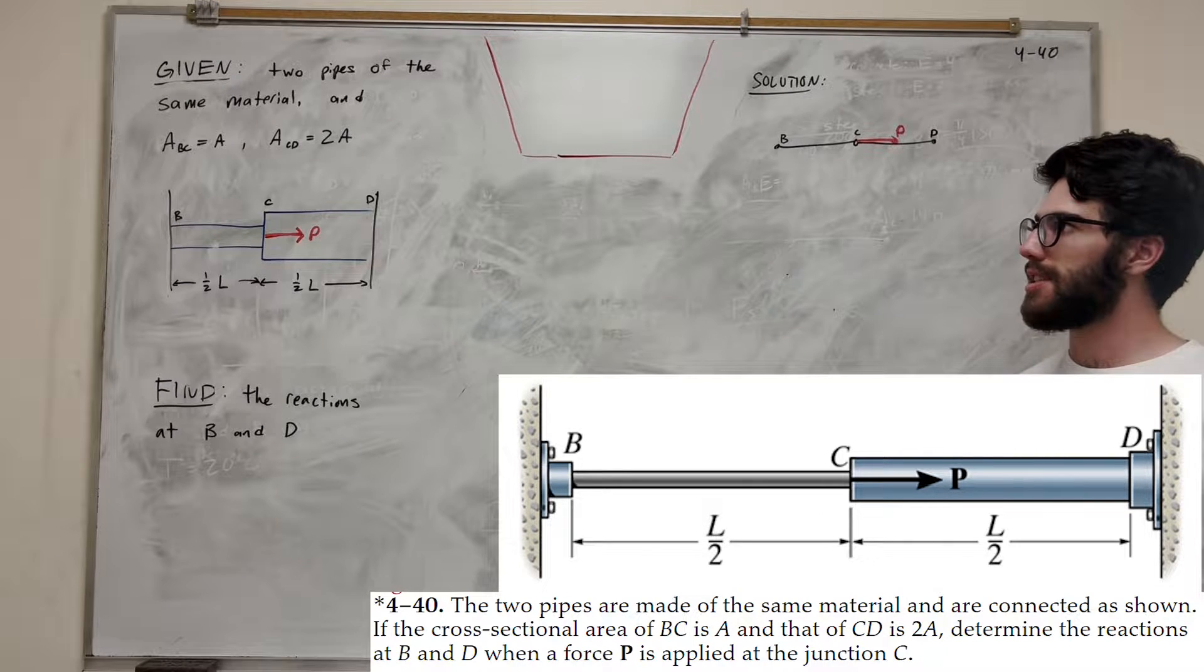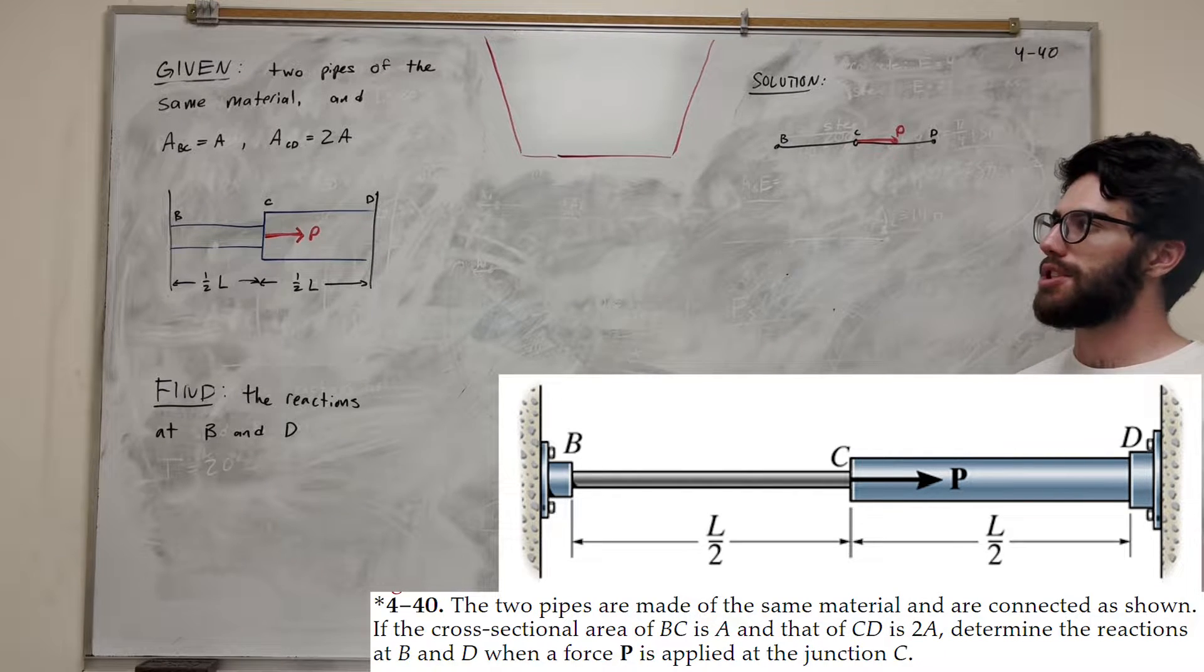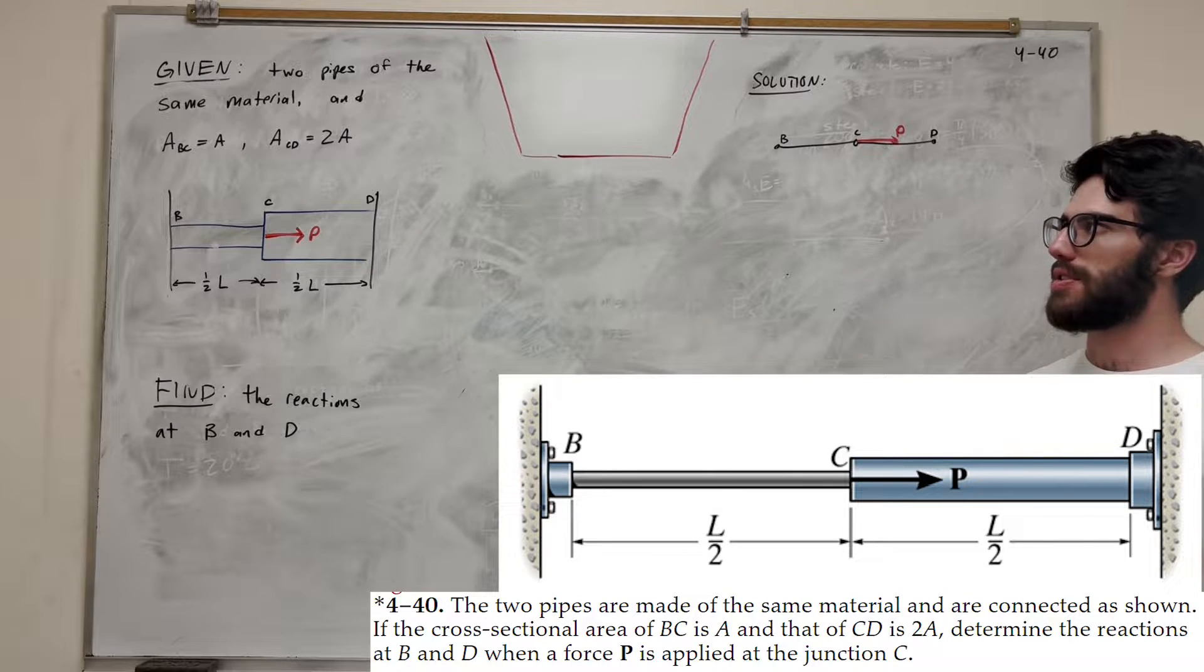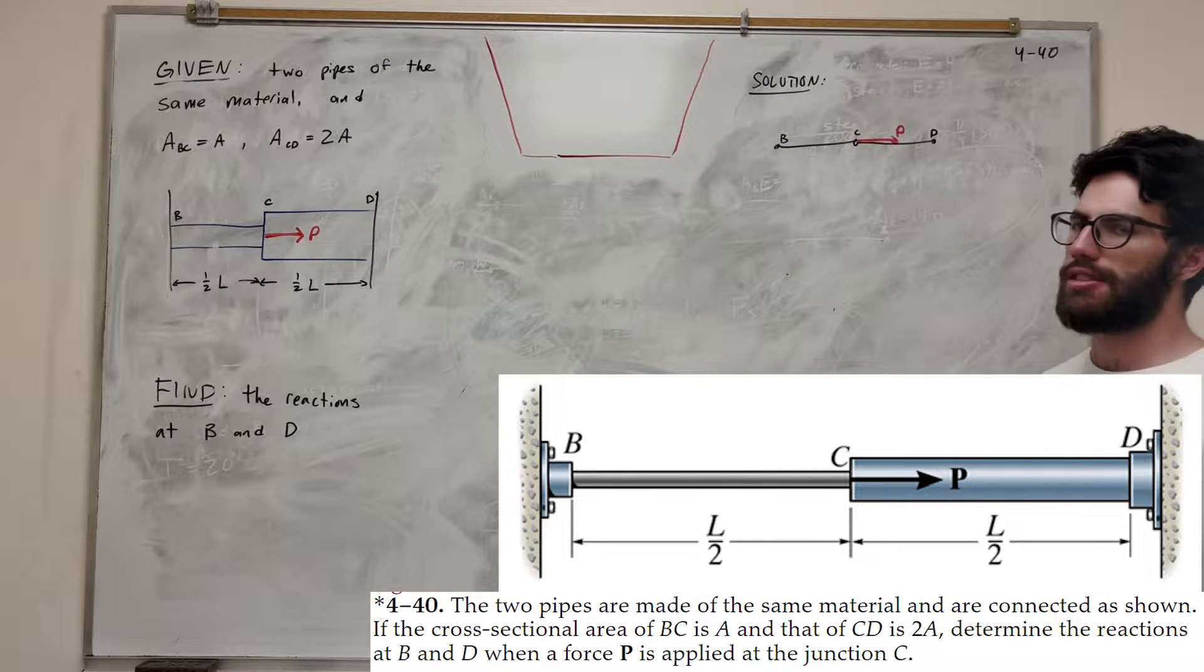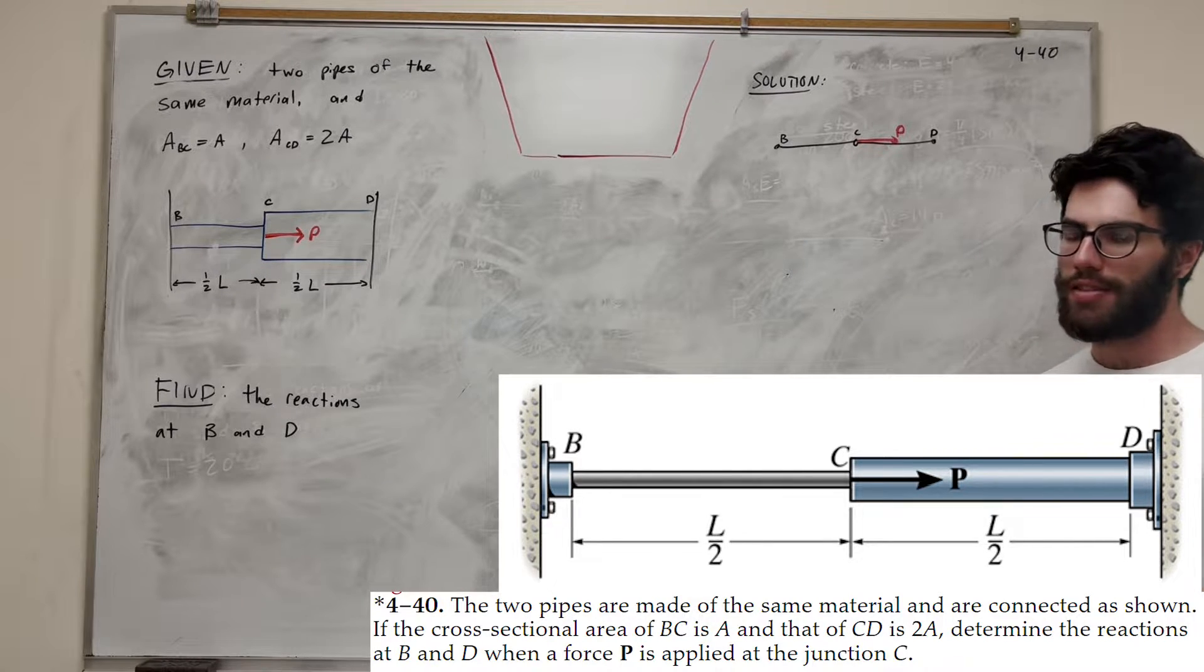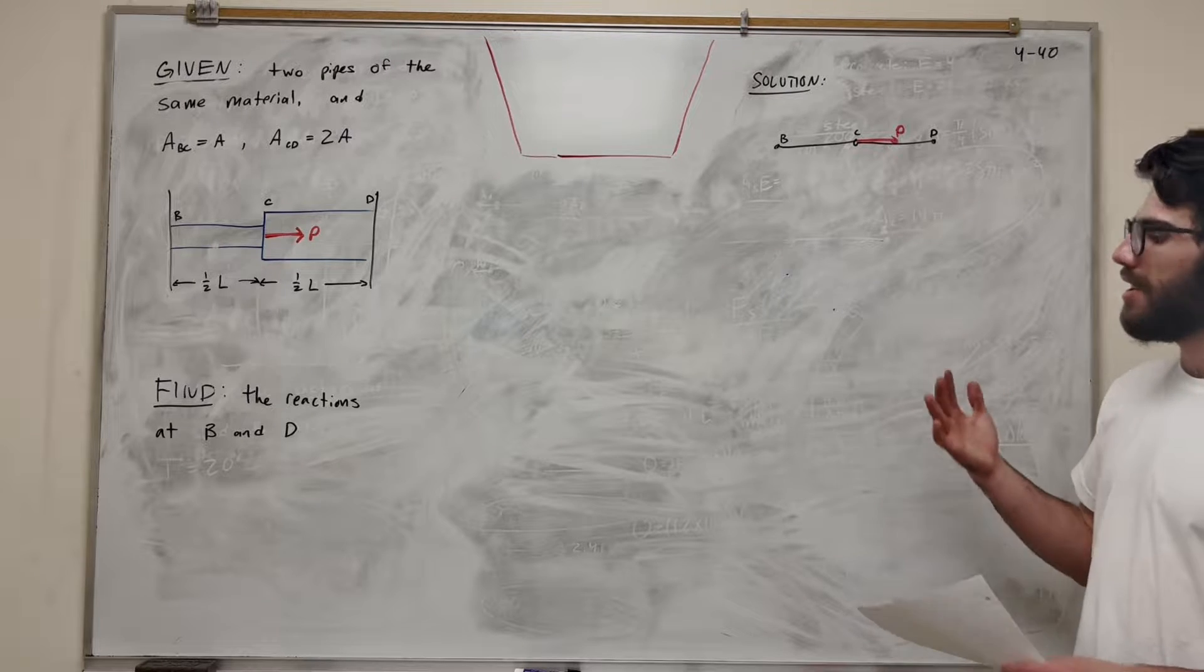What's up Cal gang, welcome back to some mechanics. So we've got this problem here. We've got these two pipes. One of the pipes has twice as much area as the other pipe and we're applying this force P to it. Now our goal is to find the reactions at point B and D. There's not really any numbers in this problem. So I'm just kind of making sure we know how to do this. So let's get started.